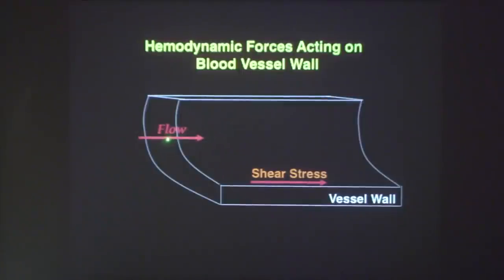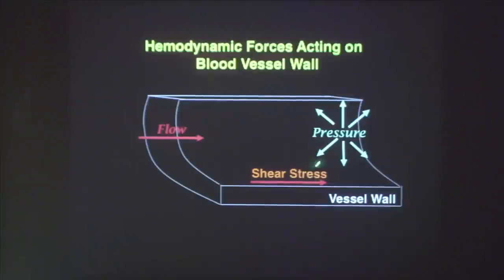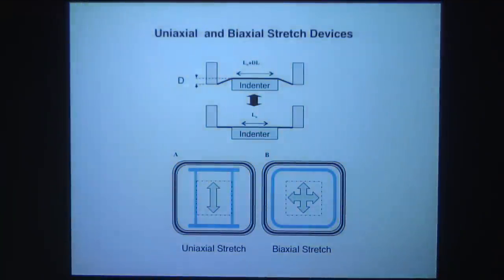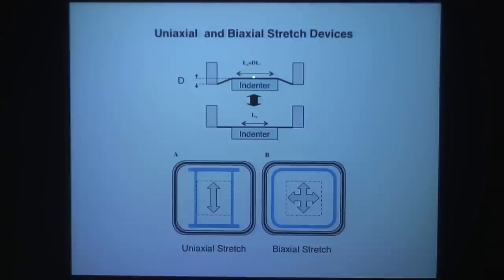There are at least two important kinds of hemodynamic forces. One is flow that induces shear stress, which is tangential to the vessel wall surface. The other is pressure, which is normal to the surface and exerts normal stress and distension, causing circumferential stress. I will first talk about the effects of circumferential stress on endothelial cells, using an in vitro device with an indenter on top of which there is a membrane, with endothelial cells cultured on the membrane.